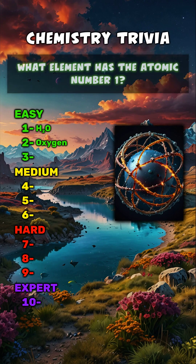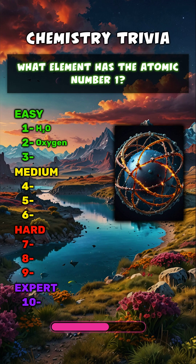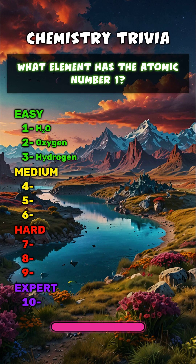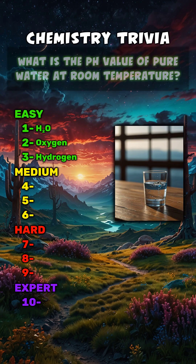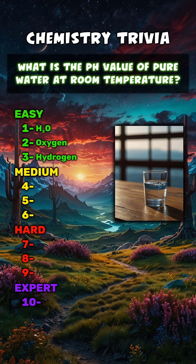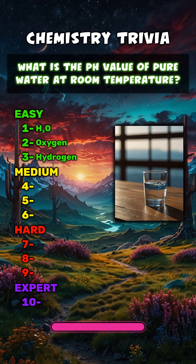What element has the atomic number one? Hydrogen. What is the pH value of pure water at room temperature? 7.